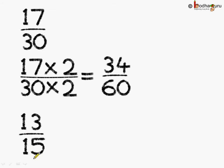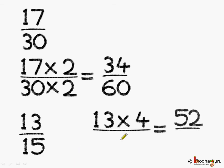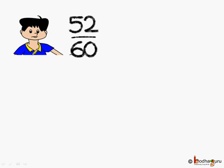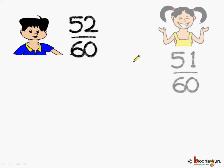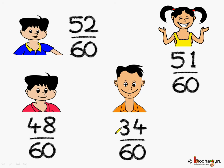The next fraction is 13 by 15. To make the denominator 60, we multiply both numerator and denominator by 4. So 13 multiplied by 4 is 52 and 15 multiplied by 4 is 60. Now we can compare the numerators: Rajat got the highest with 52 by 60, next is Khushi with 51 by 60, then Anand with 48 by 60, and Aman got 34 by 60. When denominators are the same, we compare just the numerators to find the greater fraction.